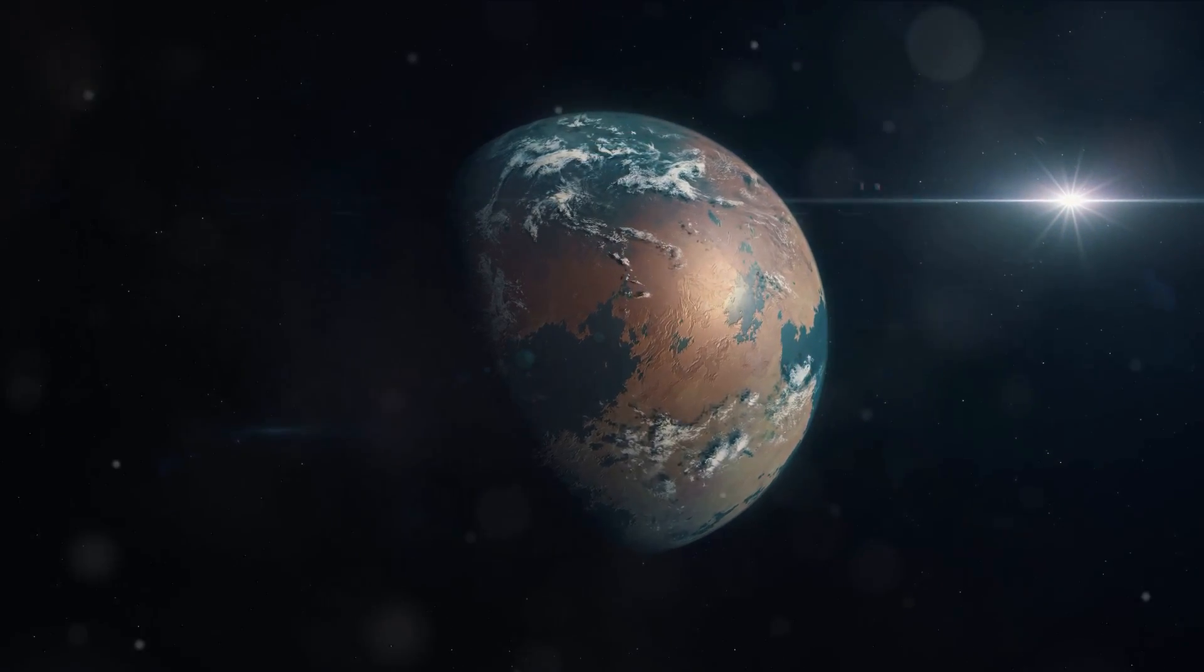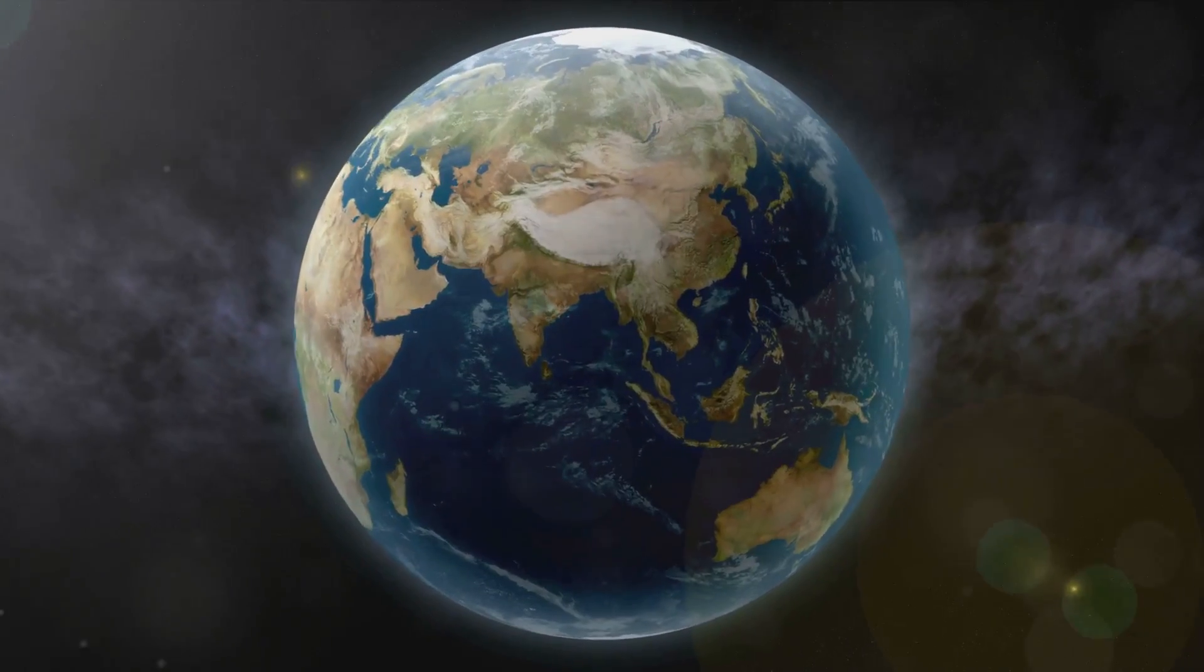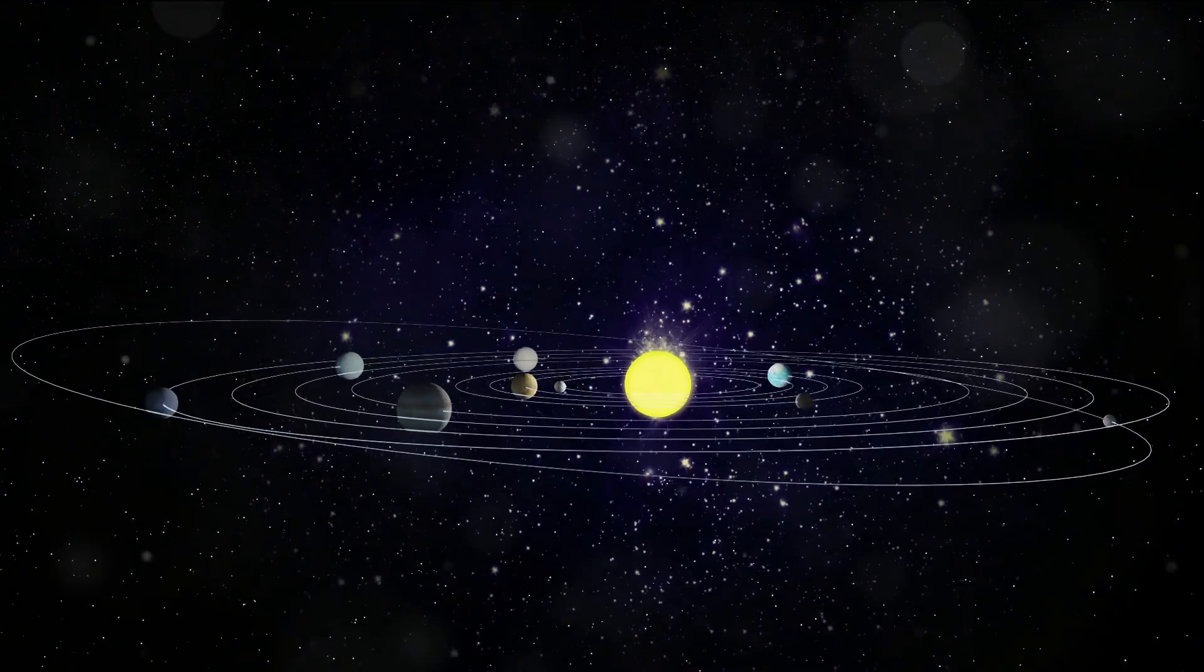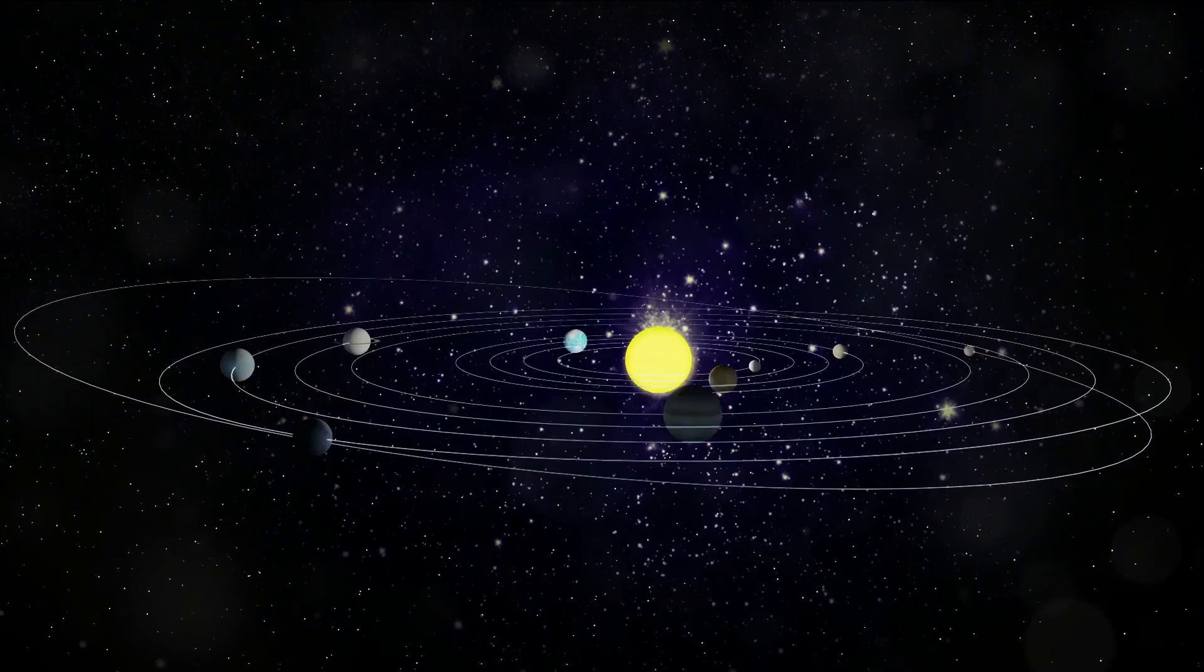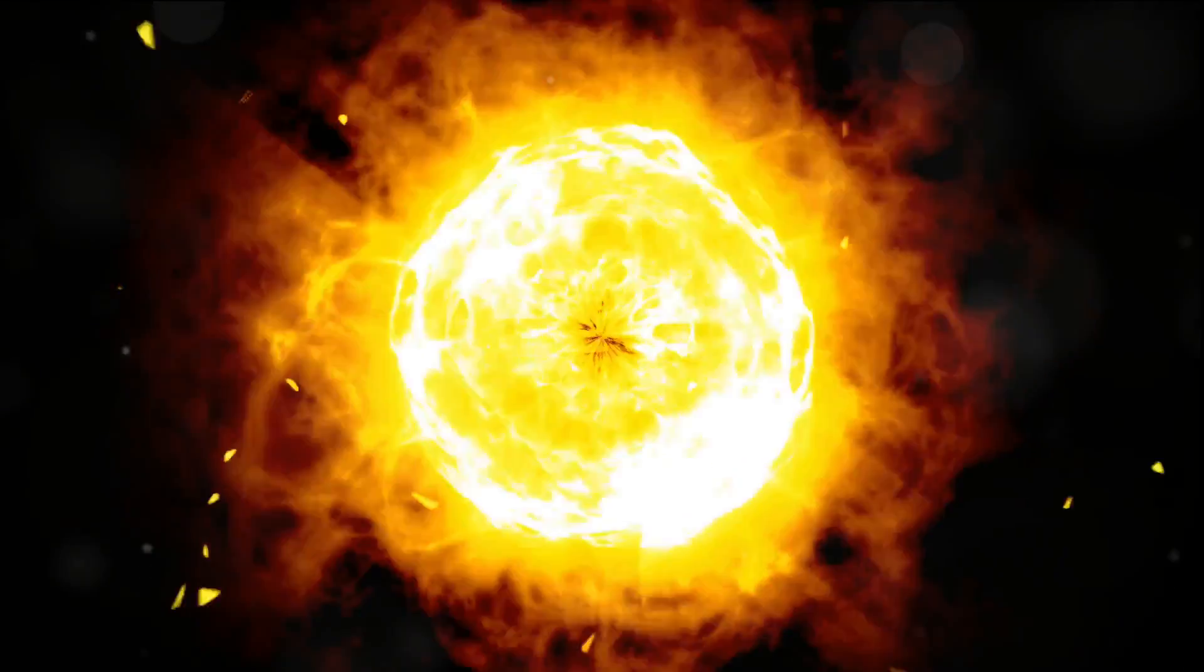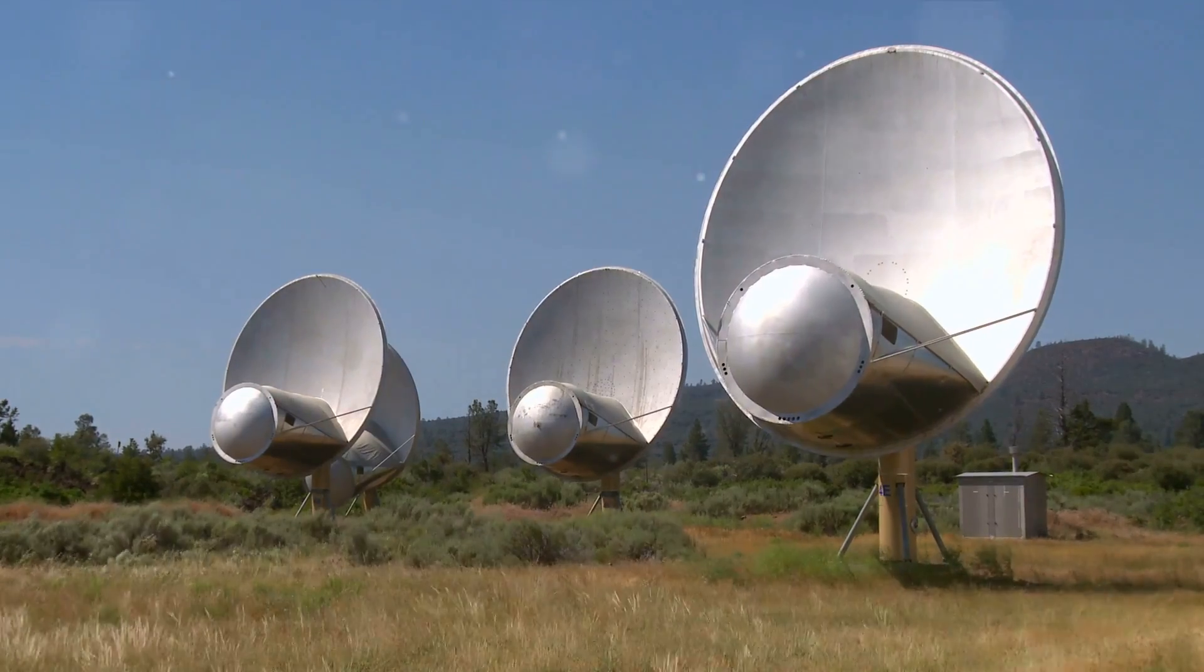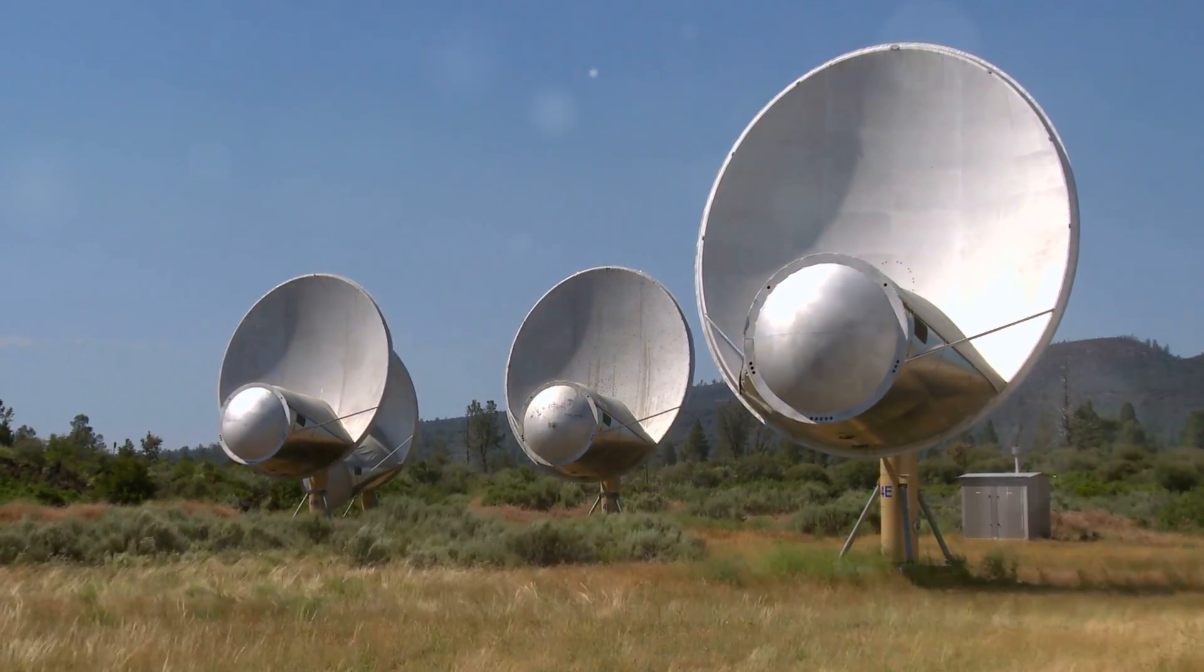So where does our home planet fit into all of this? Earth, our home, is just one small part of this vast cosmic city. Situated in the Orion Arm, we're about 26,000 light years away from the galactic center. Our location in the outskirts brings many advantages. It's relatively calm with fewer star collisions and supernovae that could potentially threaten life. It also provides us with a fantastic vantage point from where we can observe the universe and its mysteries.